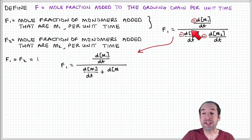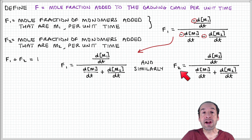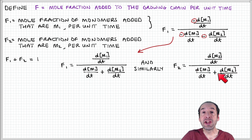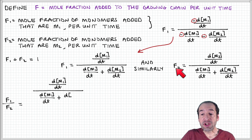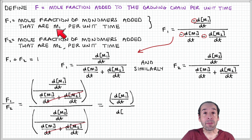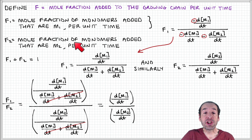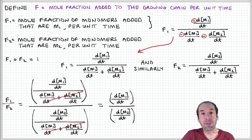We can cancel the minus signs since they appear in every term. Similarly, we can write the mole fraction of monomer 2 in the copolymer as the rate of change of monomer 2 divided by the total rate of change associated with monomers 1 and 2. Taking the ratio F1 to F2, the denominators cancel, and we get that the ratio of mole fractions F1/F2 simply equals the ratio of the rates of change of those monomers in the reaction mixture — a pretty intuitive result.